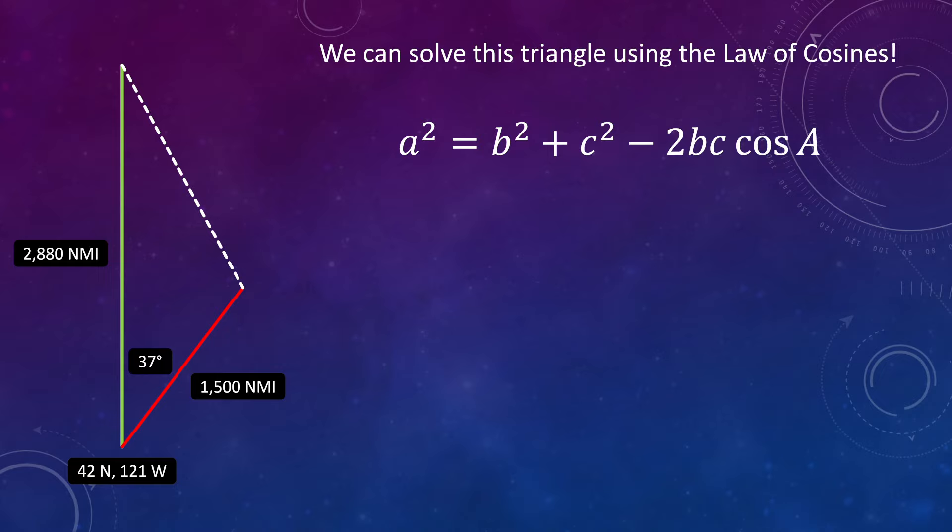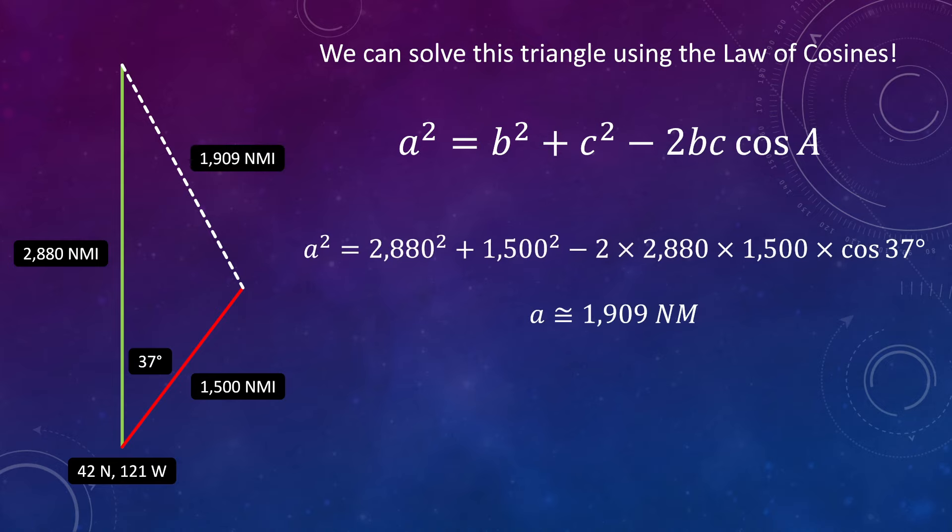Well, we can actually make a triangle here, and since we've got two sides and the angle between them, we can solve this triangle using the law of cosines to get the length of the third side. And that length of course is the distance from the north pole. So here's the law of cosines and if we plug in all the values we end up with a distance for that third side of 1909 nautical miles.